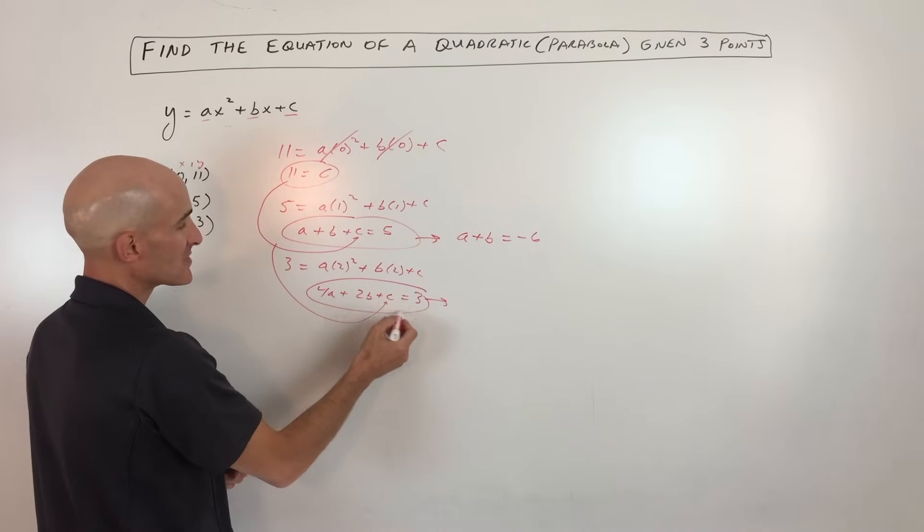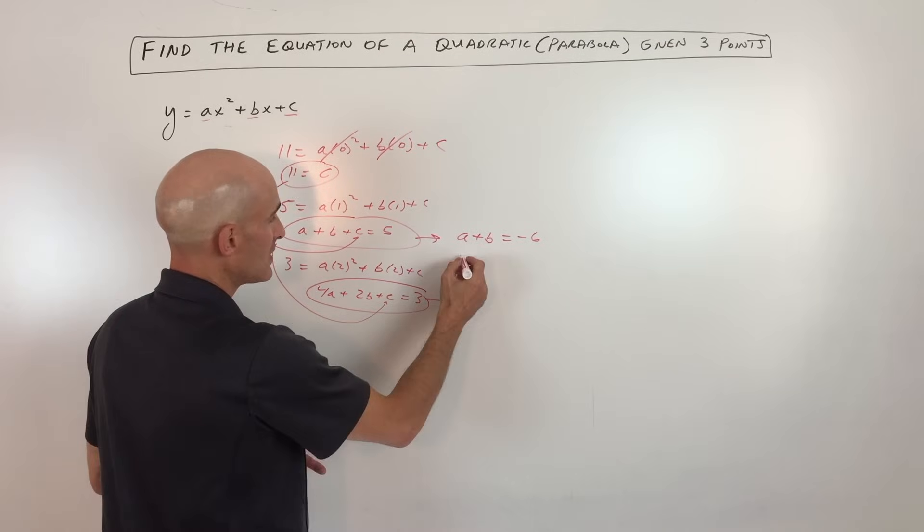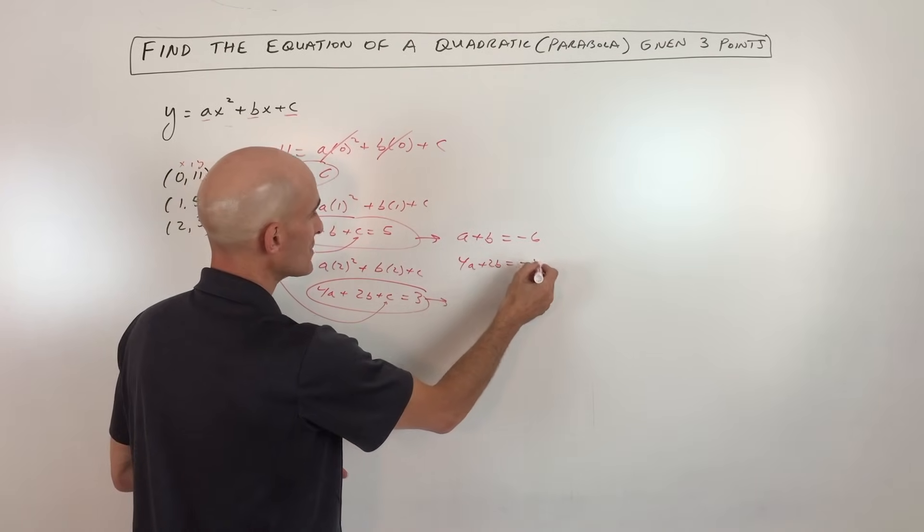And over here, if I put in 11 and subtract, that's going to give us negative 8. So we have 4a plus 2b equals negative 8.